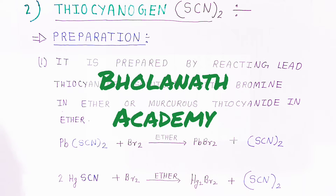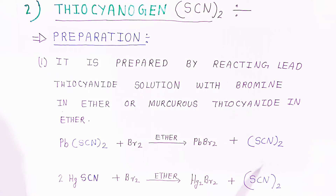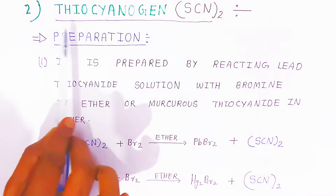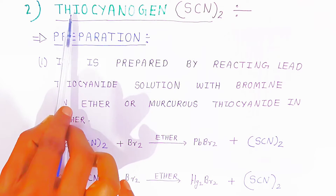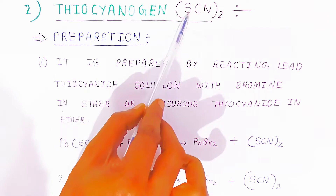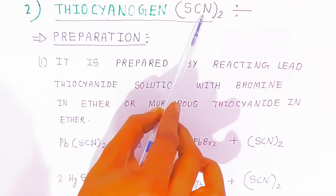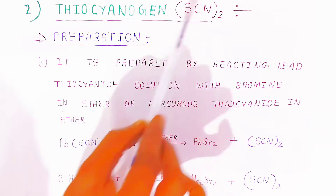Hello students, welcome to Bholanath Academy. In this video we are going to see the second example of pseudo halogen, called thiocyanogen. Thio means sulfur, and cyanogen is carbon and nitrogen.